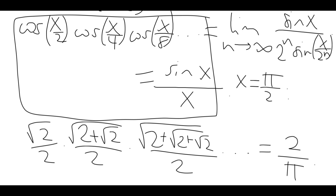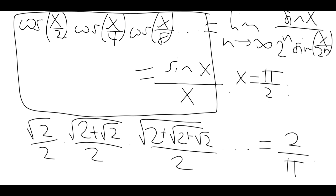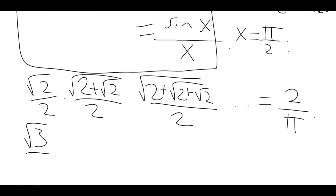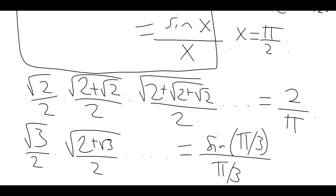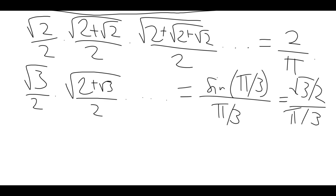We could do the same thing with x equals pi over 3, which would give root 3 over 2 times root 2 plus root 3 over 2, and so on — every time adding another nested root 2 plus. Since x is pi over 3, we end up with sine pi over 3 over pi over 3. Sine pi over 3 is root 3 over 2, so we get the nastier formula 3 root 3 over 2 pi.